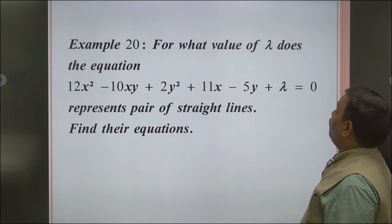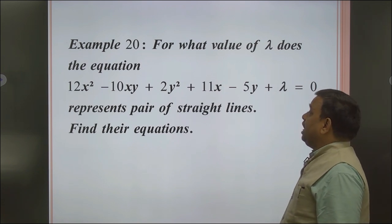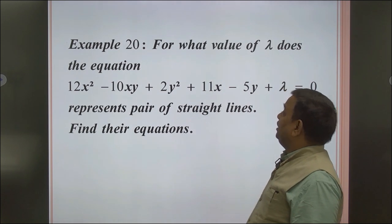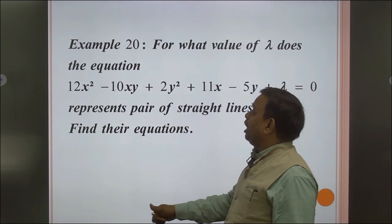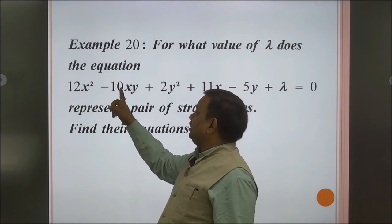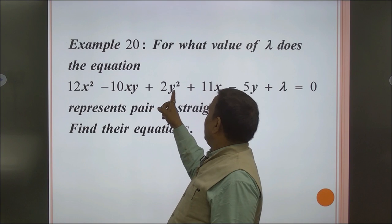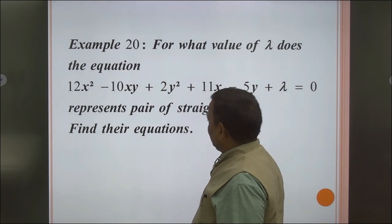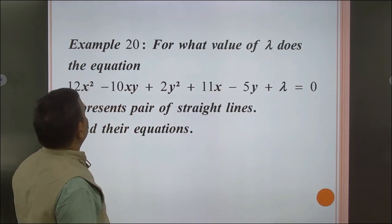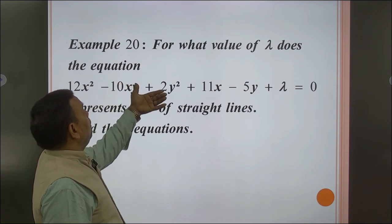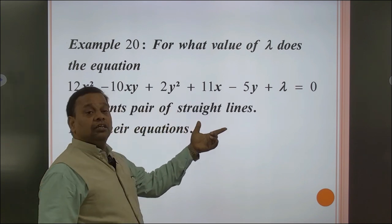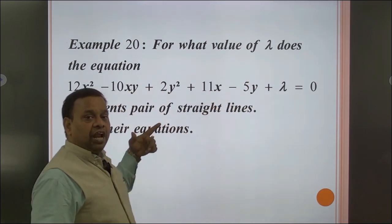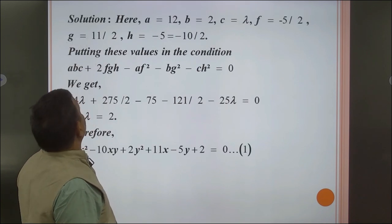Next example: for what value of λ does the equation 12x² − 10xy + 2y² + 11x − 5y + λ = 0 represent a pair of straight lines? We need to find the value of λ for which this equation represents a pair of straight lines.